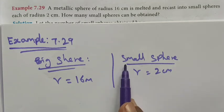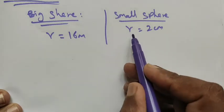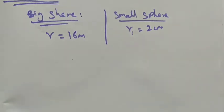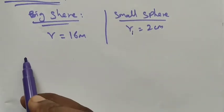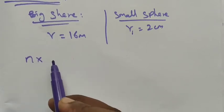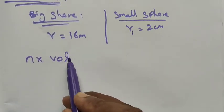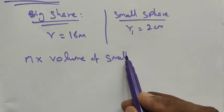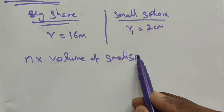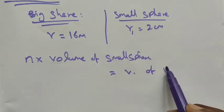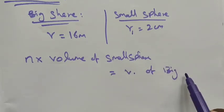We have two radii, so let me take one radius as r1. The number of terms n into volume of small sphere is equal to the volume of the big sphere.